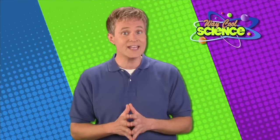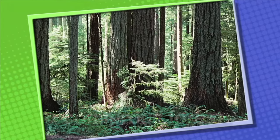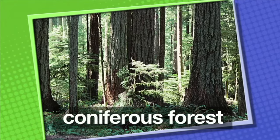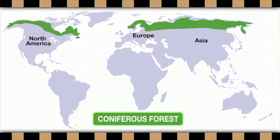The next habitat we're going to explore is the forest. There are three different kinds of forest habitats, and each forest habitat is home to many different types of plants and animals, like lions, tigers, and bears — oh, my! The first type of forest habitat is called coniferous forest. Coniferous forests are found in the northern regions of the world, on the North American continent, parts of northern Europe, and northern Asia.